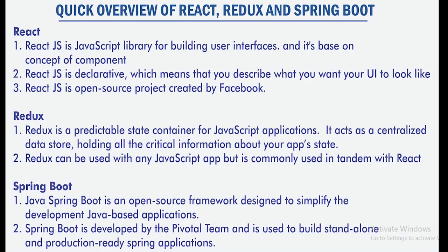Here is a quick overview of React, Redux, and Spring Boot, which are the pillars of our app. React JS is a JavaScript library for building user interfaces and is based on the concept of components. React JS is declarative, meaning you describe what you want your UI to look like. React JS is an open source project created by Facebook. Redux is a predictable state container for JavaScript applications — it acts as a centralized data store holding all critical information about the app's state. Redux can be used with any JavaScript app but is commonly used with React.